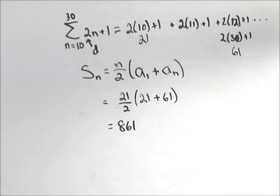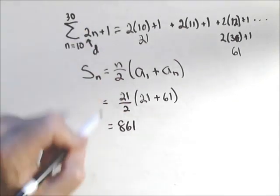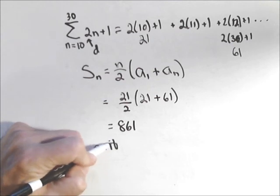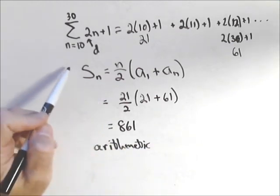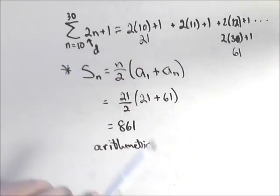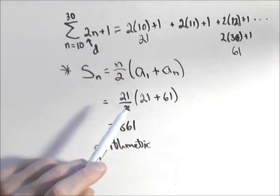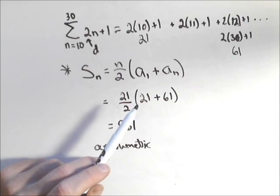If you get a summation notation and it's linear, remember that if it's linear, it's arithmetic, and you can use our formula for arithmetic. If it were exponential, it would be geometric, and you could use our formula for summation of a finite geometric.